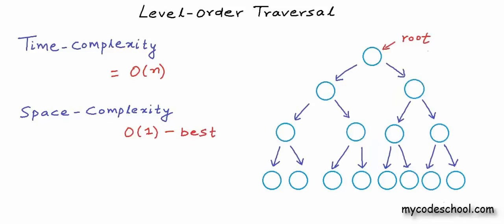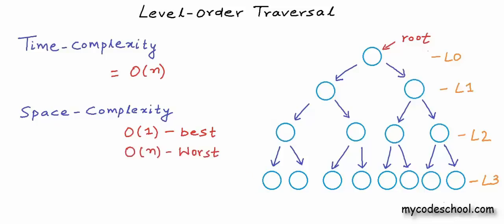But for a tree like a perfect binary tree where all levels are full, at some point all nodes at a given level will be in the queue. In a perfect binary tree, we will have n/2 nodes at the deepest level, so the maximum number of nodes in the queue will be at least n/2. The extra memory used is therefore proportional to n, and space complexity will be O(n) for this case. For the average case, space complexity will also be O(n). So for both worst and average cases we are O(n) in space, while time complexity is O(n) for all cases.